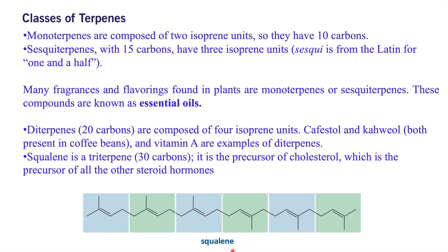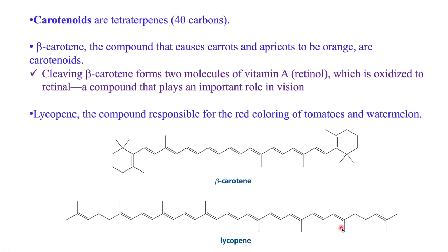Cholesterol is the precursor for all steroidal hormones present in our body. Squalene has 30 carbons, meaning it has six isoprene units. You can count six methyl groups in its structure: six multiplied by five gives 30 carbons. Each methyl group represents one isoprene unit made up of 5 carbons and 8 hydrogens.